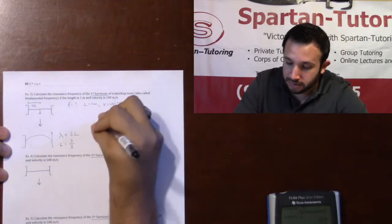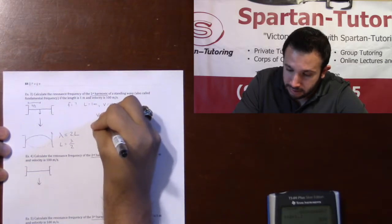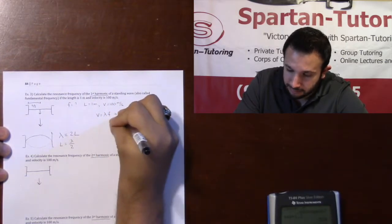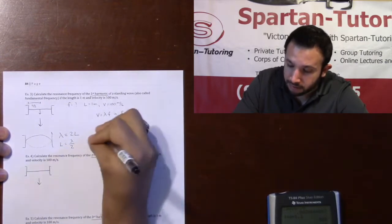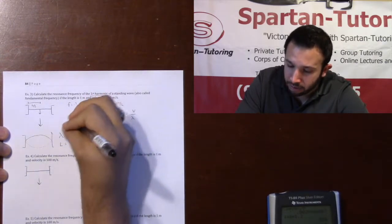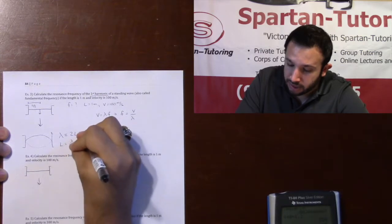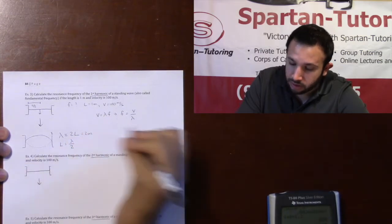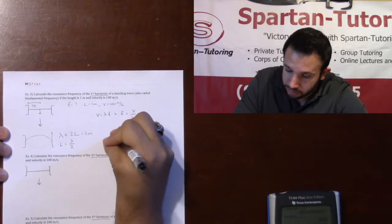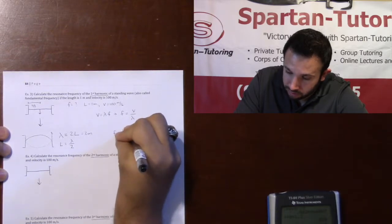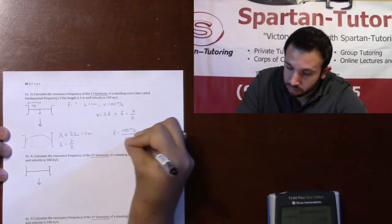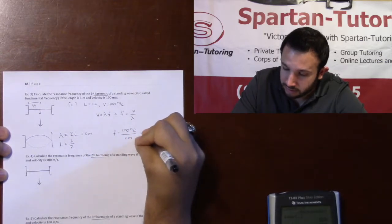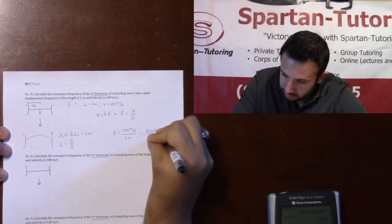And so, if you want to find your frequency, if velocity is equal to lambda times F, that means that F is V over lambda. And in our case, we have that lambda is 2 times L, so it's going to be 2 meters, so that means that your frequency is your 100 meters per second divided by 2 meters, which comes out to 50 hertz.